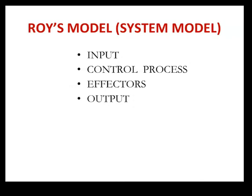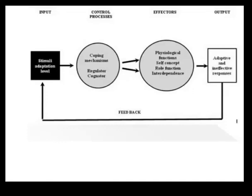Roy's model consists of an input, control process, effectors and output. In the input you can see stimuli. According to Sister Callista Roy, there are three different stimuli, and based on these stimuli, the person undergoes a control process. In the control process, the main elements are coping mechanisms — mainly the regulator and cognator.